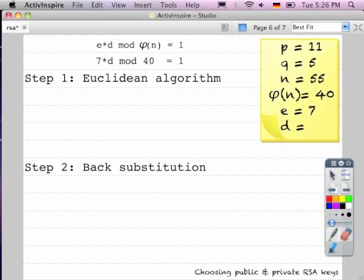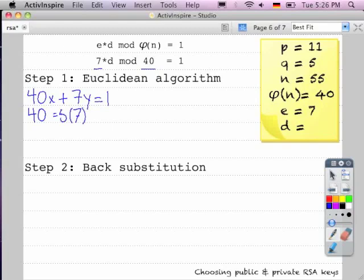The extended Euclidean algorithm has two steps, but before we get started we're going to substitute 7 and 40 for e and the totient. For the first step we're going to transform our 40 and our 7 and put it into a Euclidean equation. From this we're going to take the 40 and put it on the left-hand side of an equal sign. We'll take 7 and put it on the right-hand side and ask how many times does 7 go into 40? The answer is 5. So 5 times 7 is 35 so we need to add 5 to balance out our equation.